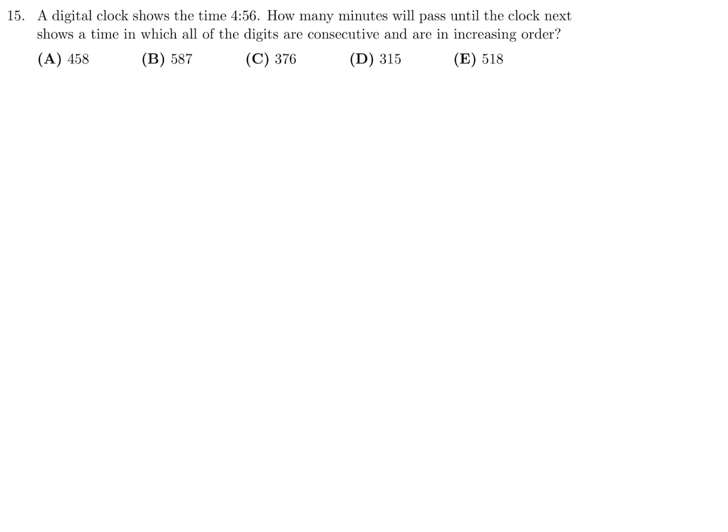A digital clock shows the time 4:56. How many minutes will pass until the clock next shows a time in which all the digits are consecutive and in increasing order? I just used the answer choices. I just added 458 minutes to 4:56, and when I did that, it brought me to a time of 12:34. And as you can clearly see, this satisfies the condition that you have consecutive digits, and they're in increasing order.